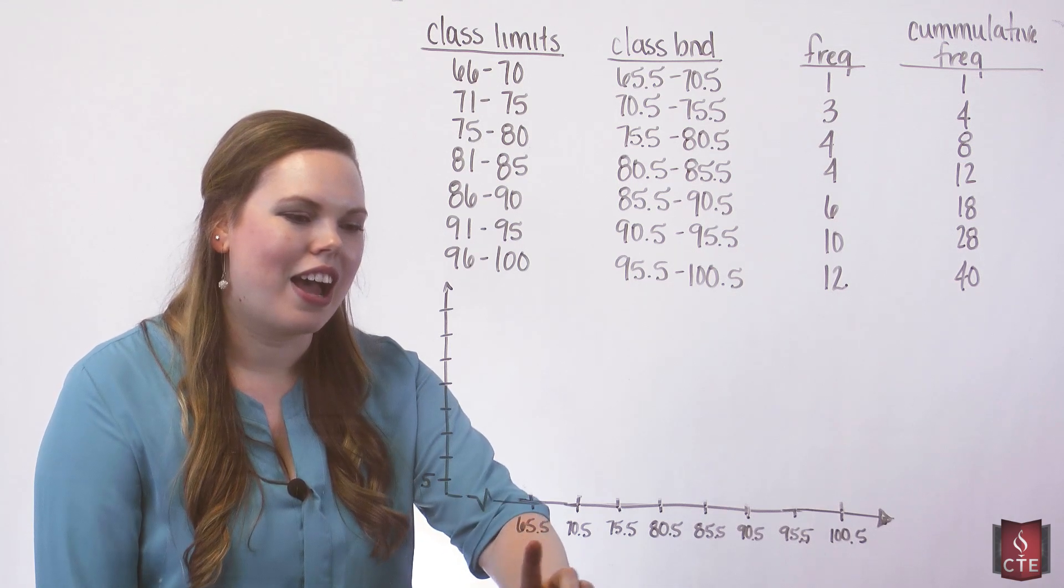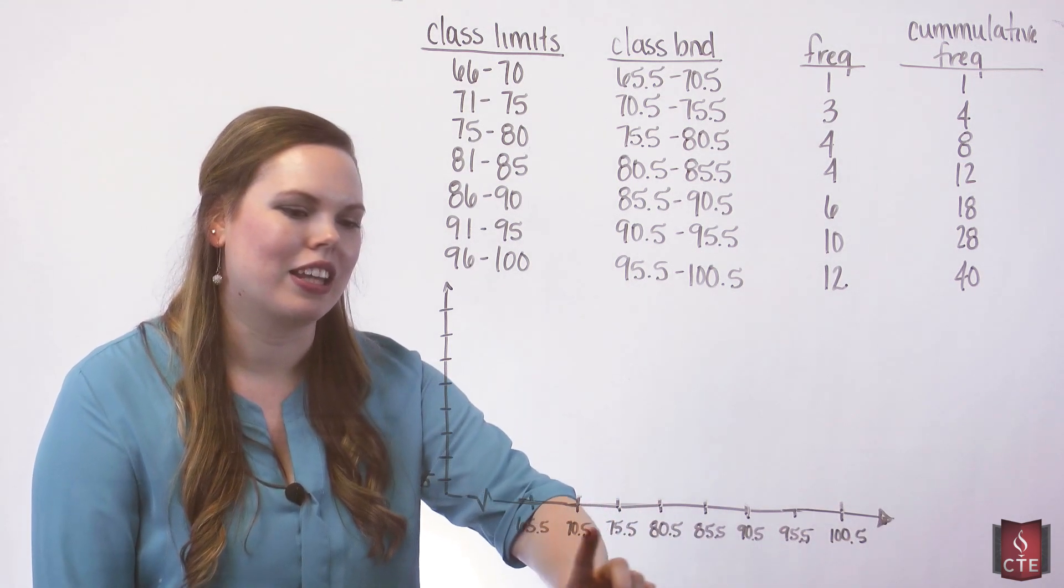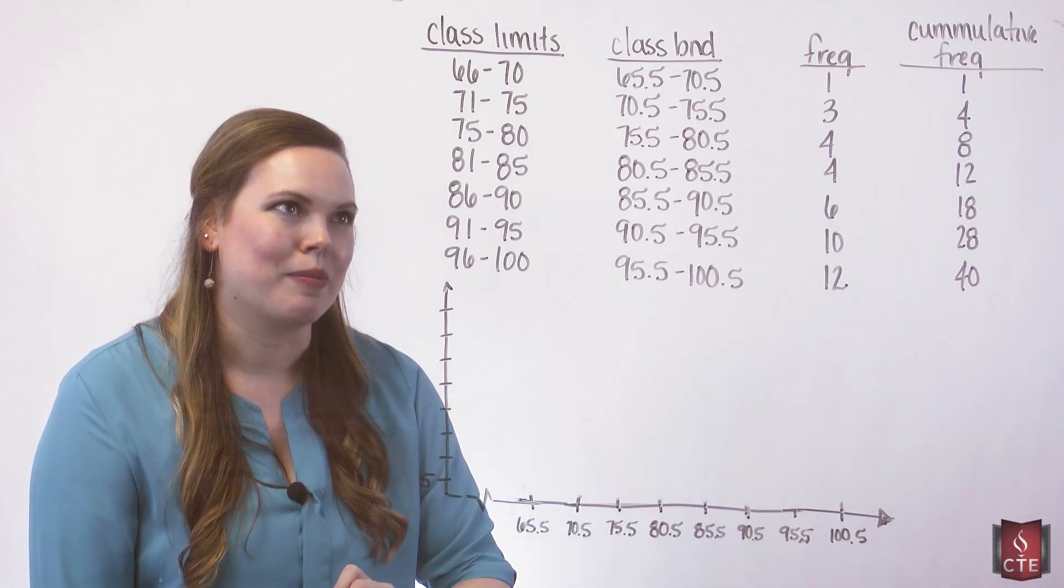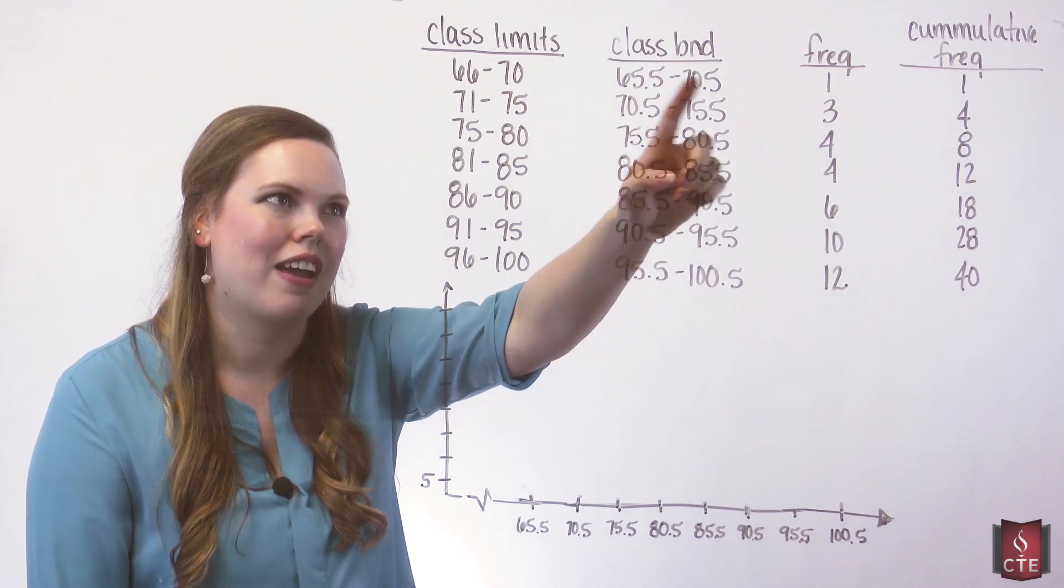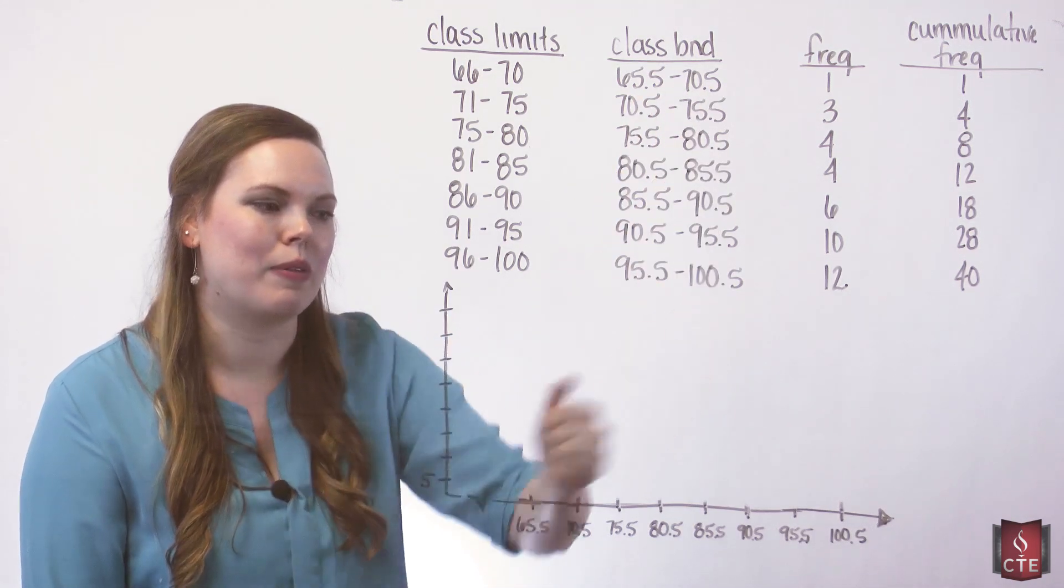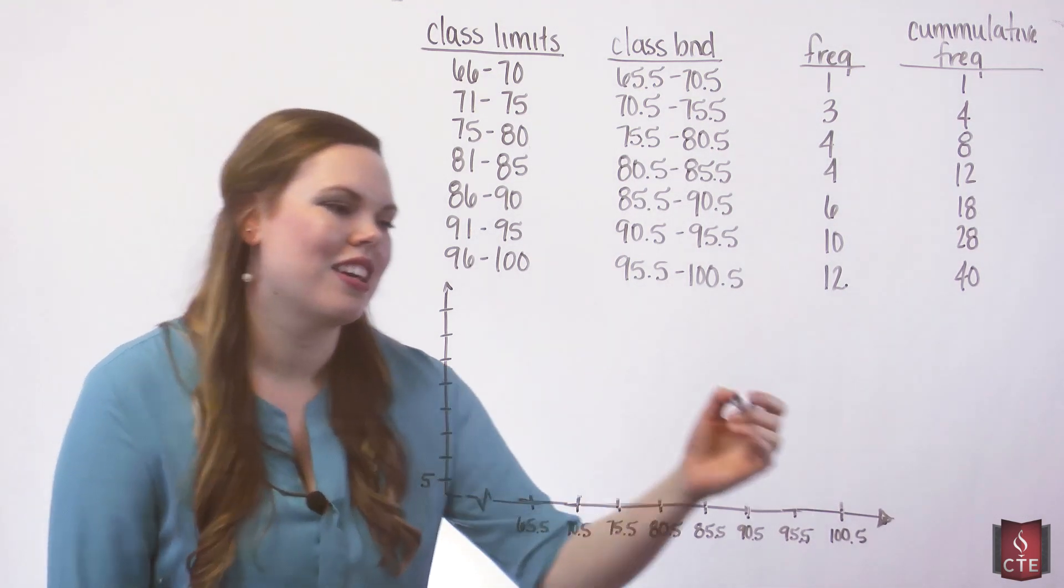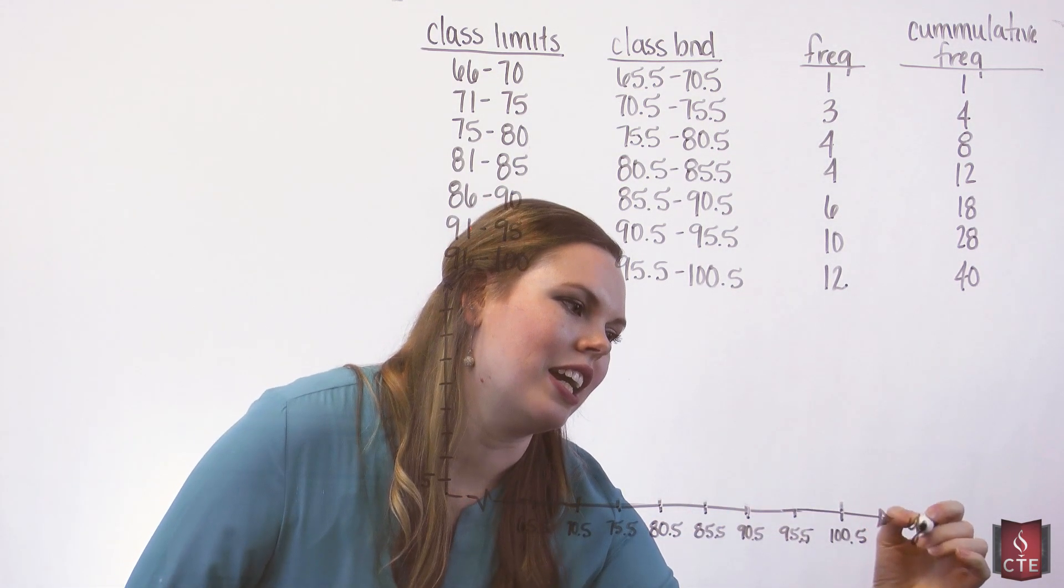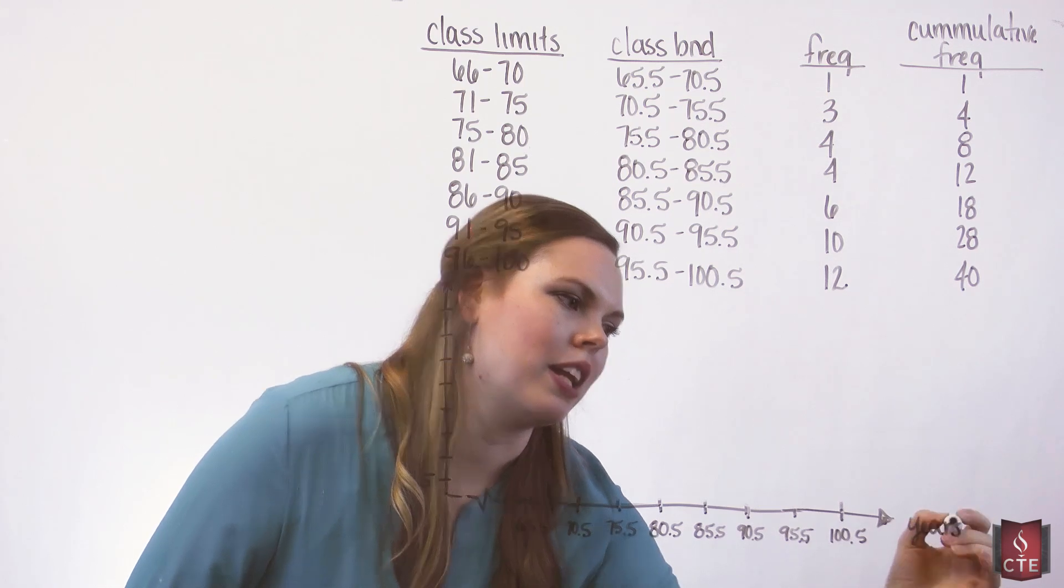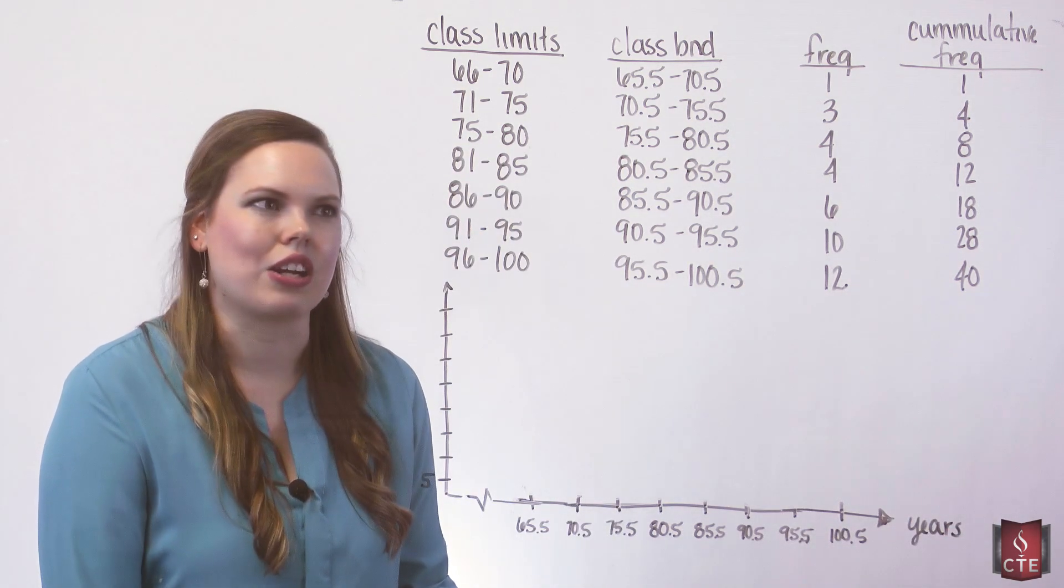So I have along here already my class boundaries starting at 65.5 and including all of them up to 100.5. These are years and these are pennies that were collected in 1999, a group of 40 pennies, and then written down their years.